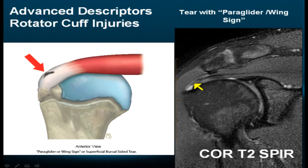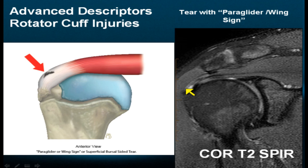Sometimes these bursal-sided tears will have just a few fibers covering over them on the top. So these bursal-sided tears may be concealed — just barely — or non-concealed. In other words, you may see right on top of them when looking from the outside in.